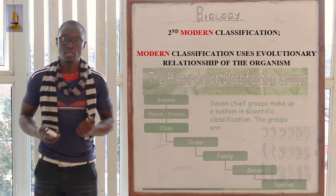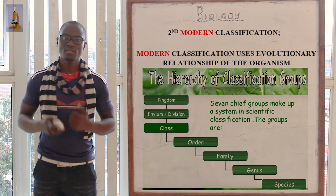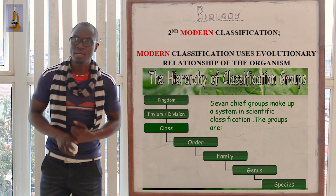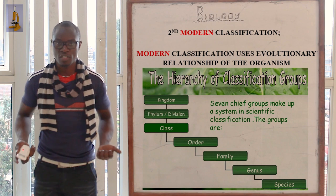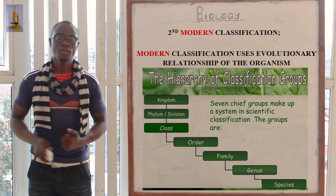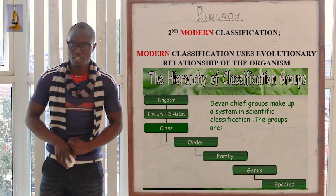In modern classification, the main basis is the evolutionary relationship of different organisms. Organisms under a similar evolutionary relationship are placed in one kingdom. As we are going to see, they will be placed in the same genus, the same family, the same order, the same phylum or division, kingdom, and finally the species.